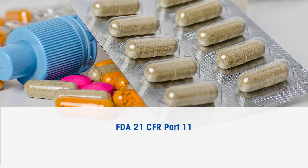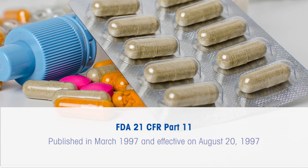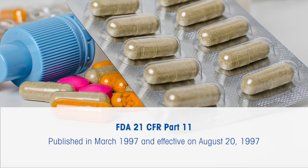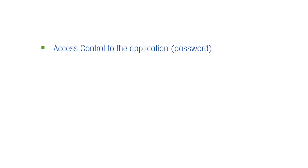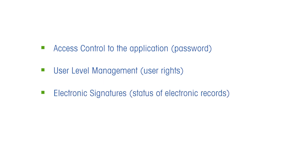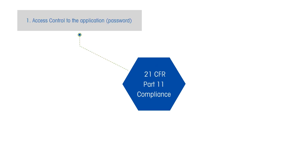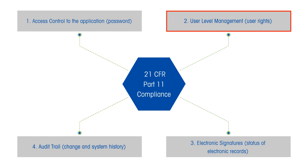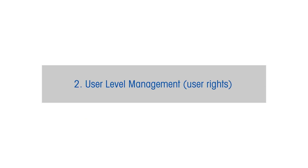The CFR option provides the mandatory technical controls for compliance with 21 CFR Part 11 Regulations on Access Control, User Level Management, Electronic Records, Electronic Signatures, and Audit Trail. STAR-E enables Access Control to the Application, User Level Management, Electronic Signatures, and Audit Trails. User Level Management is Part 2 of a series of 4 how-to videos teaching you how to make best use of the STAR-E CFR option for data integrity.